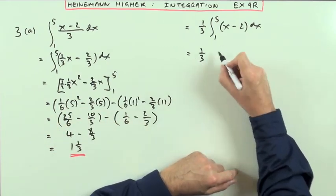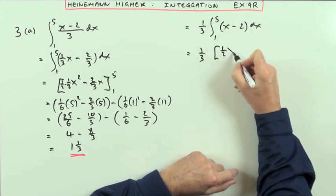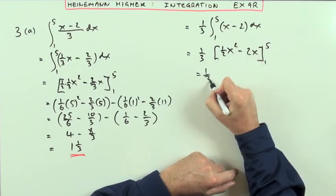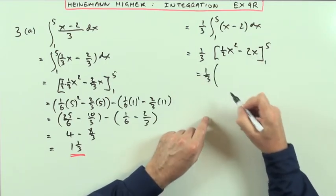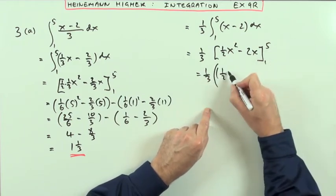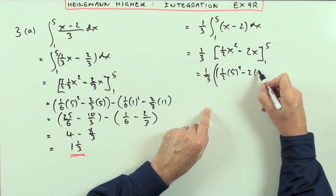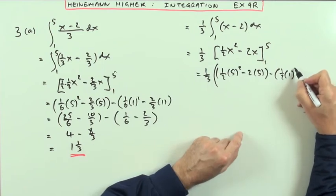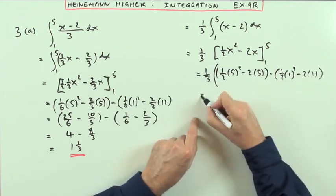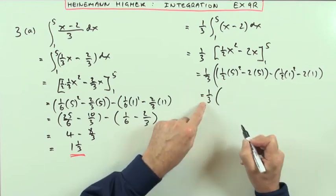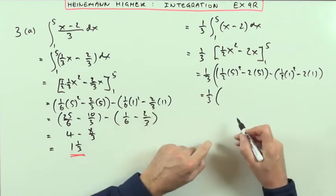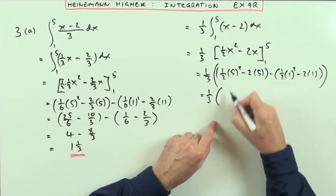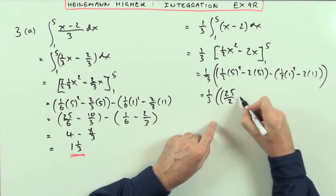So leaving the third tethered to the side, this nicely becomes a half of x squared, divide by 2, back to a linear term. Working it out at 5: a half of 5 squared minus 2 times 5, take away a half of 1 squared minus 2 times 1, keeping the third waiting on its leash. That gives 25 over 2 minus 10.